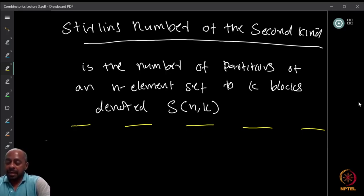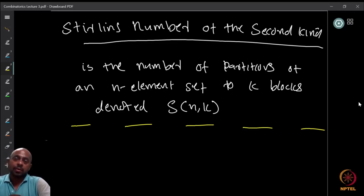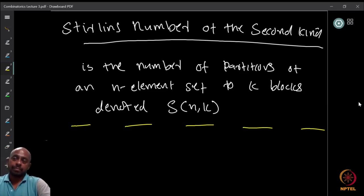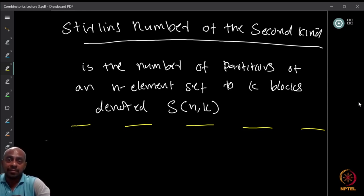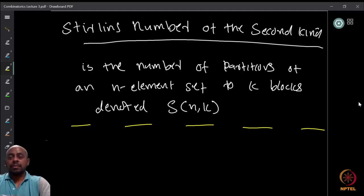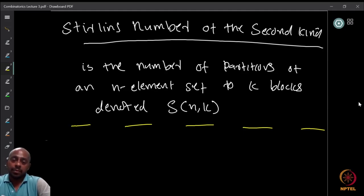The number of partitions of an n-element set into k blocks is denoted S(n, k) and is called the Stirling number of the second kind. One might ask what happened to the first kind — the Stirling numbers of the first kind are much more involved to compute and we will look at those in a later part of the course. For now we will stick with the Stirling numbers of the second kind.